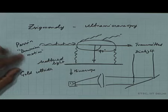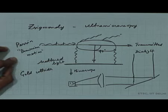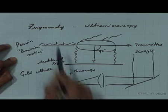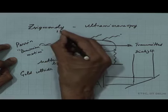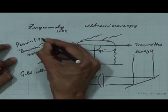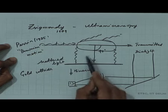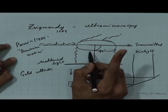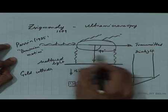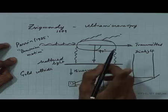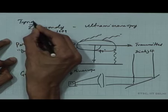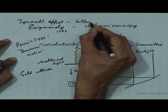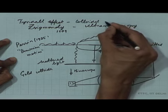Perrin's measurements of Brownian motion gave a very good estimate of Avogadro's number, supporting the atomic hypothesis — which got Perrin the Nobel Prize. Zsigmondi won the Nobel Prize in 1909; Perrin won in 1925 or 1926. So the Tyndall effect seen in colloids arises from the size of the particles — that is one optical property. Colloidal optical properties also give them very distinct colors.